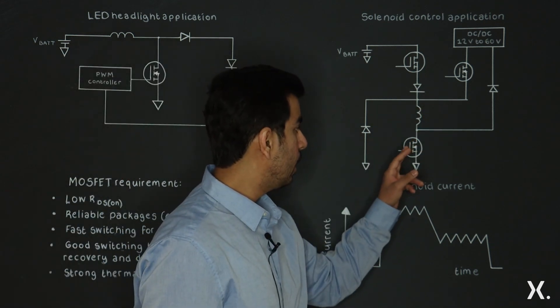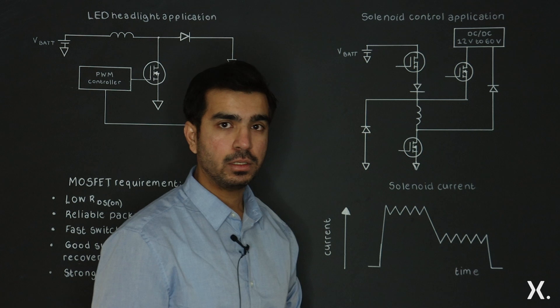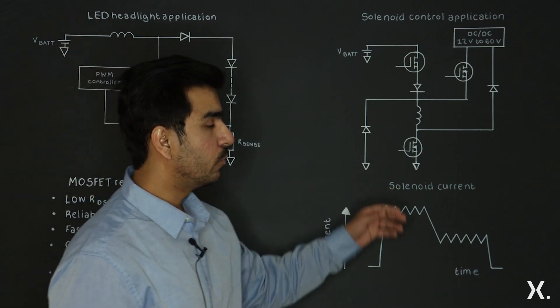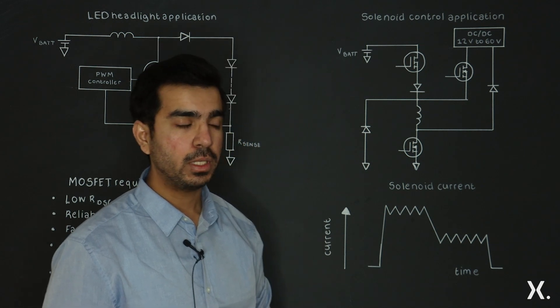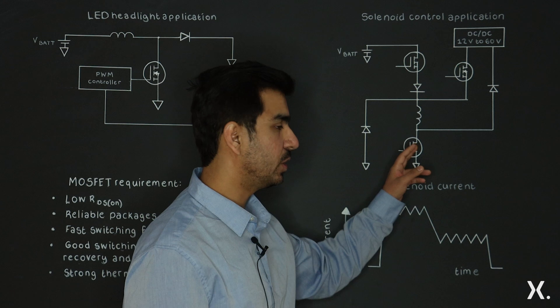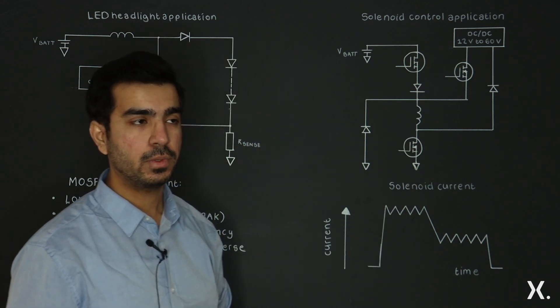This boost MOSFET and this selection MOSFET both need to be rated at the same voltage. The selection MOSFET would decide which injector is needed. Normally there are several injectors, so we are using only single injector solenoid injector in this example.